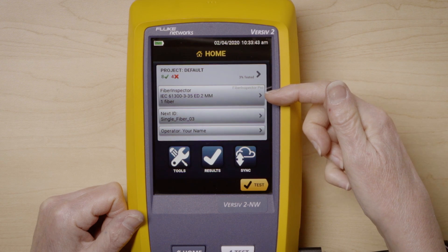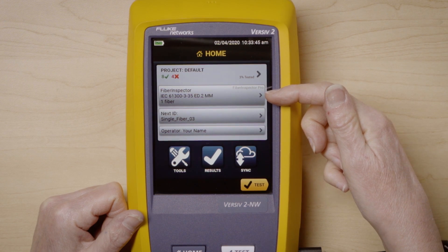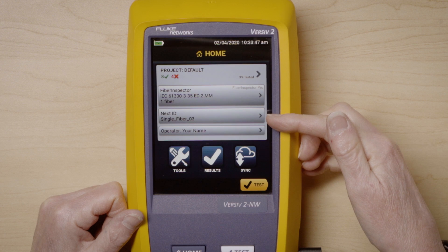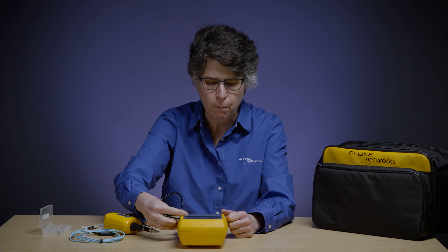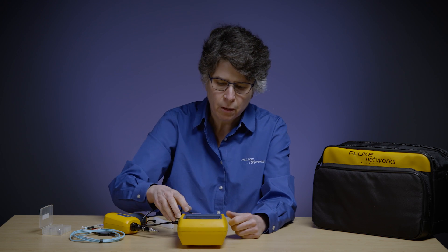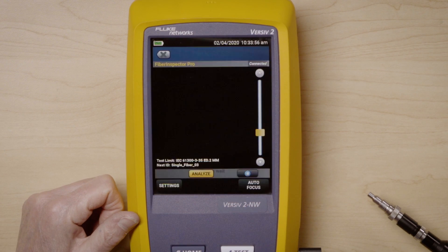My test is a fiber inspection multimode test type for a single fiber. I'm using a single fiber cable ID. If I wanted to, I could put my operator name in, but I'm not going to bother with that today. And so let's go ahead and press test and start.